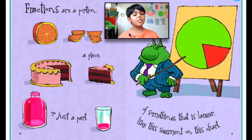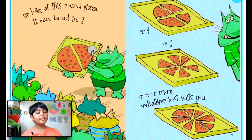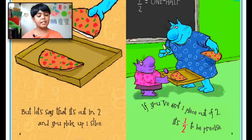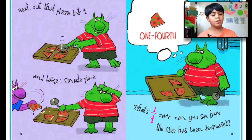Fractions are a portion, a piece, or just a part of something that is larger — like the segment on this chart. Look at this round pizza: it can be cut in two, or four, or six, or eight or more, whatever best suits you. But let's say it's cut in two and you pick up one slice. If you've got one piece out of two, it's one-half, to be precise.